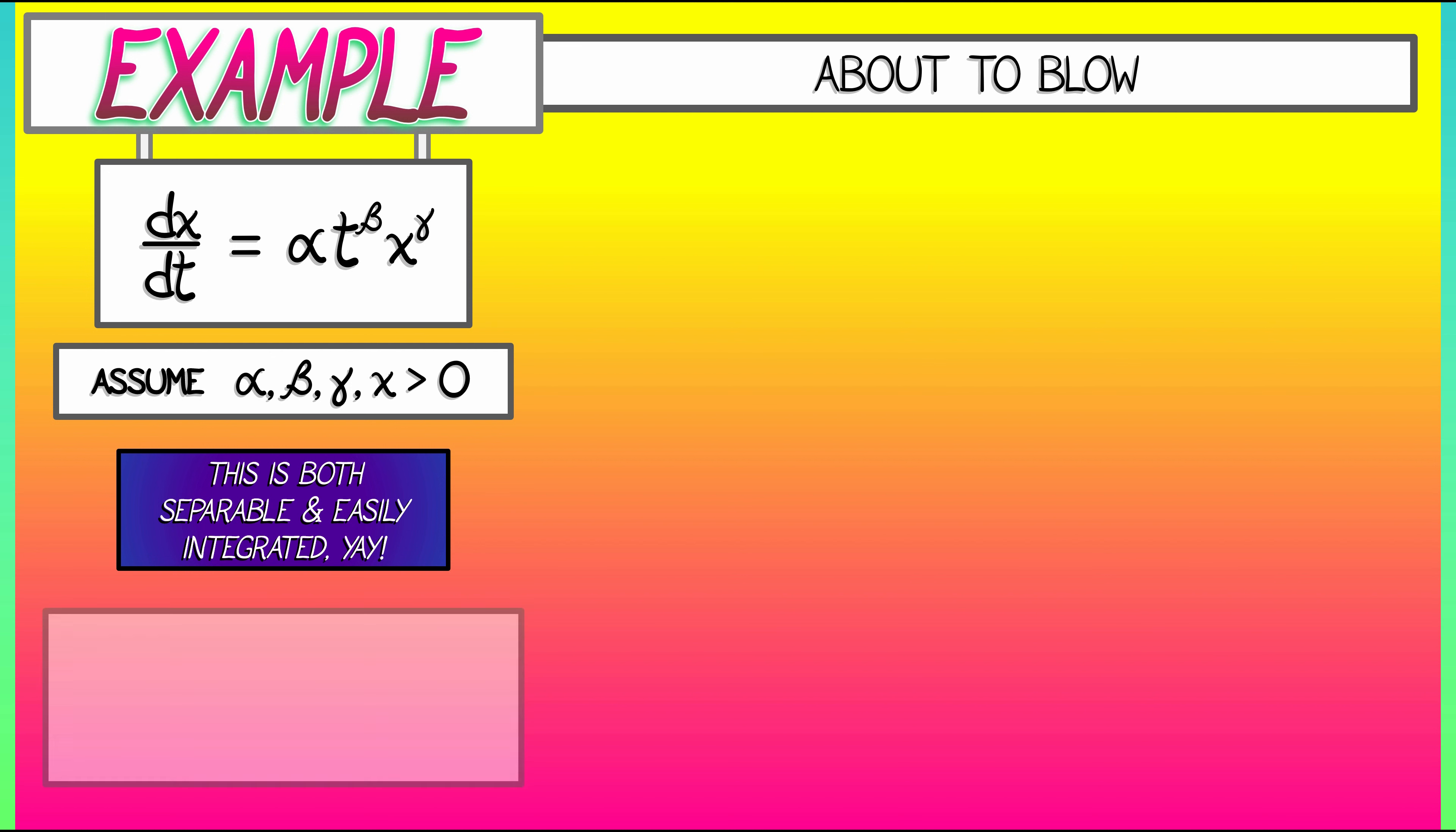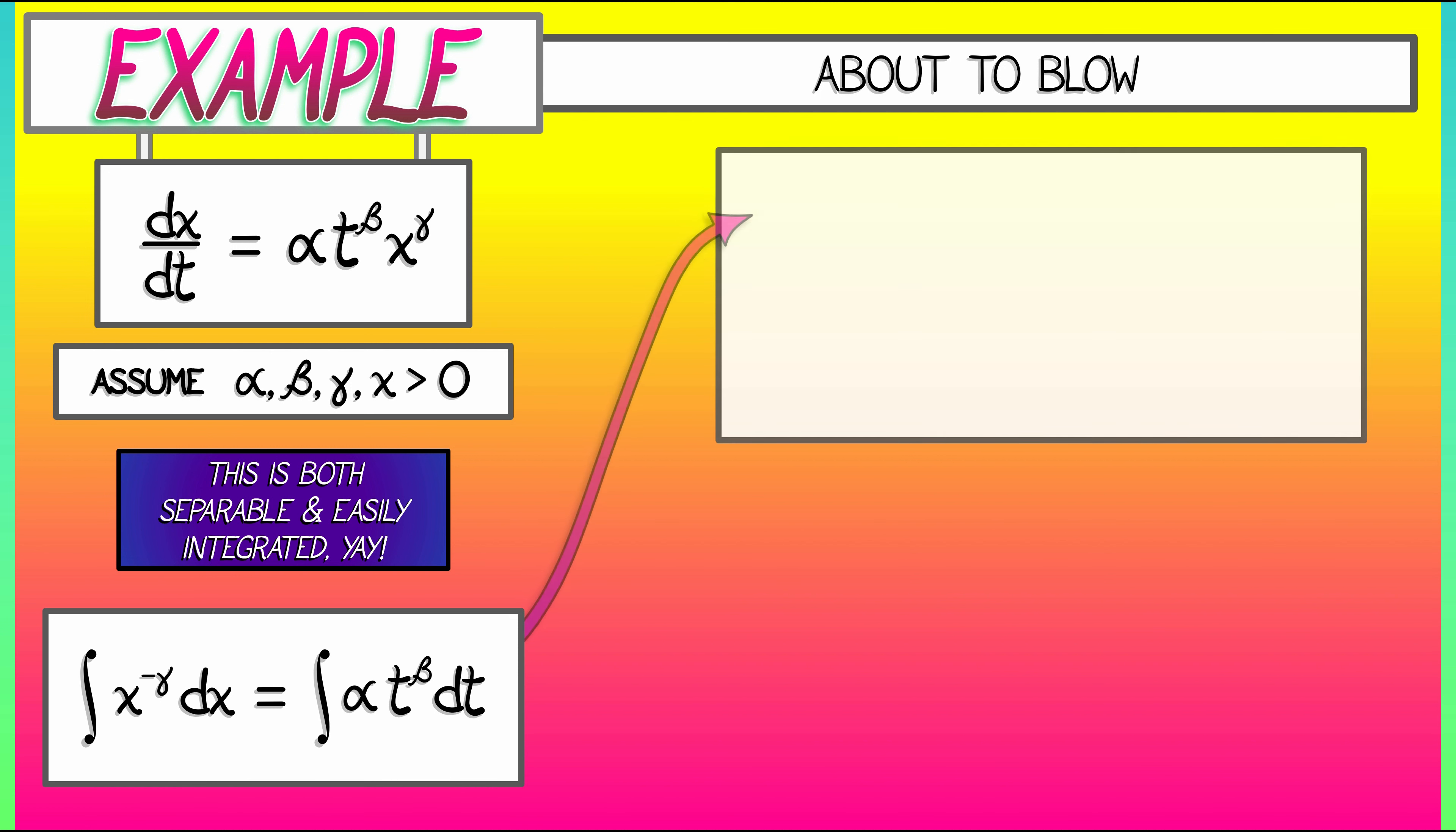On the right, multiplying through by dt, we have alpha times t to the beta times dt. On the left, dividing through by x to the gamma, we have x to the minus gamma dx. Integrate both sides, no problem. On the left, integrating x to the minus gamma gives us 1 over 1 minus gamma times x to the 1 minus gamma. On the right, integrating alpha times t to the beta gives us alpha over 1 plus beta t to the 1 plus beta. Don't forget the constant plus c.